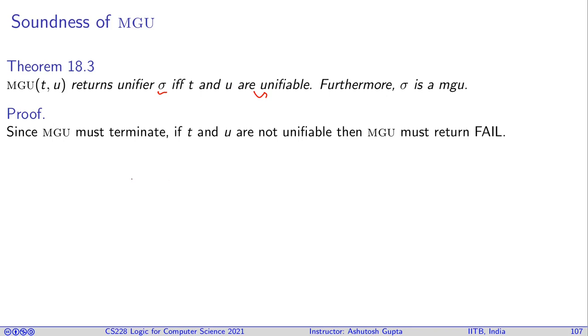How do I prove that? Since MGU must terminate, we have proven the termination. If t and u are not unifiable, then MGU must return FAIL. The loop in the program terminates only when there is a unifier found which makes t and u equal. Since t and u are not unifiable, then there is no way we can find the unifier. So therefore it must terminate by a fail, and since there is termination, you have to go this way.